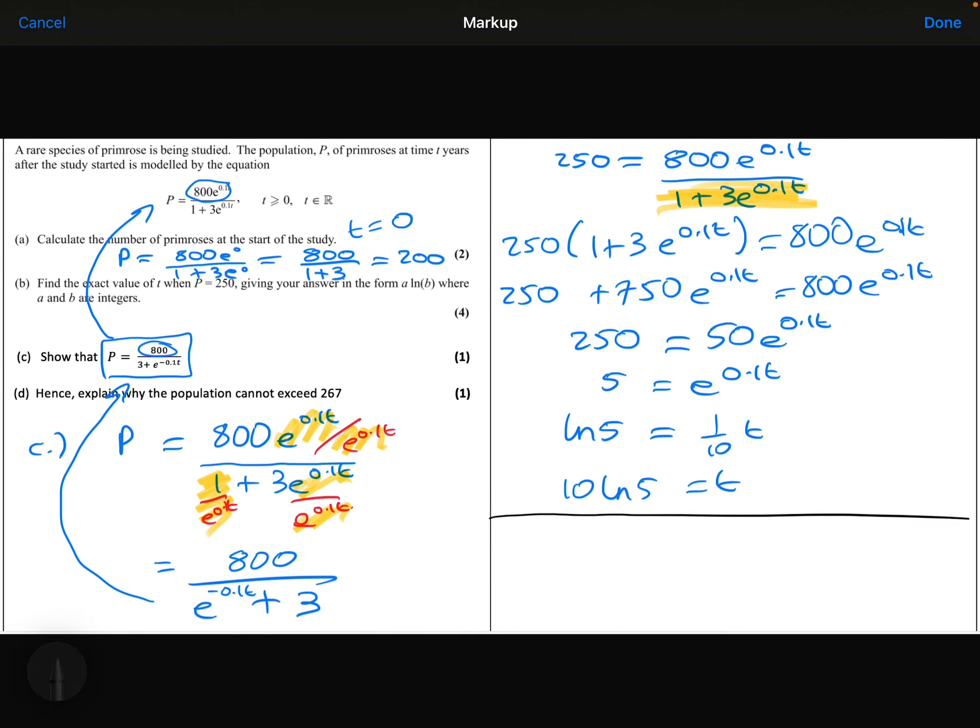Finally, part D of the question. Hence, why can the population not exceed 267? Well, what's going to happen after a long period of time? We can see that the primroses are increasing in number. They're growing. We can see there's 200 at the beginning.